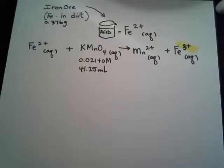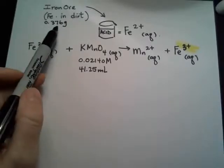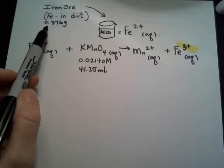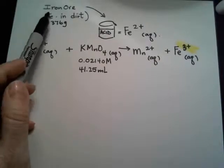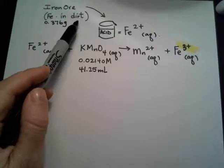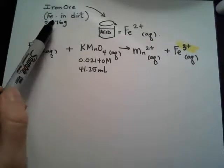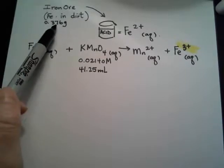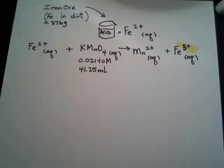So we have a 0.376 gram sample right here of iron ore. Iron ore is basically the dirt in the ground. Iron is inside of that. So you can think of it as an impure iron sample or just think of it as what it is. It's iron ore, so it contains a certain amount of iron in there. But the sample of the dirt or the ore is 0.376 grams.